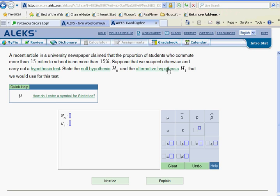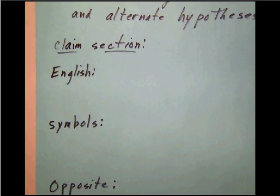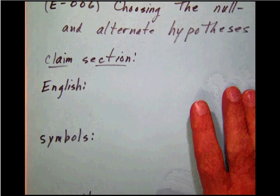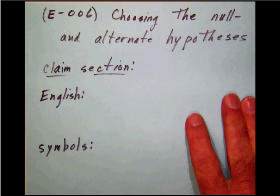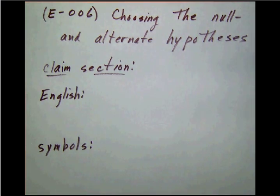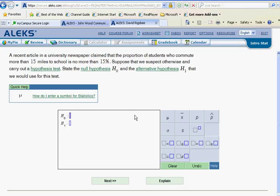State the null hypothesis and the alternative hypothesis that we would use for this test. Well, once again here, what I would suggest that you do is to follow my form step by step. And notice that on this form, the first thing that we want to do is to look at this claim section. Now in the claim section, the first part is to go over there and identify the claim in English.